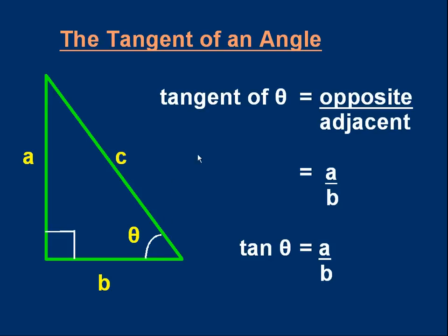The tangent of an angle is simply the opposite over the adjacent length. So here's a picture here. Look at theta. The opposite is a. The adjacent is b. The tangent of theta is a over b. Opposite over adjacent.